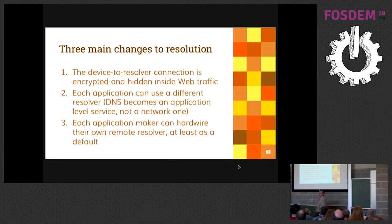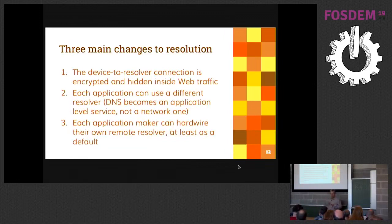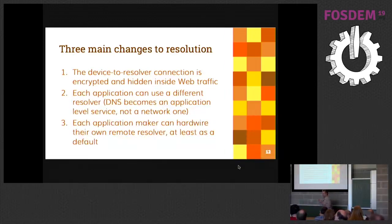If you try to define the three main changes this brings to how average users resolve names, these are them. The first one is that you're encrypting the device-to-resolver connection — and not just encrypting it, you're hiding it inside web traffic. The protocol was designed so that it's impossible from the outside to distinguish whether HTTPS traffic contains DNS queries or normal web page requests. So it is basically impossible to filter.